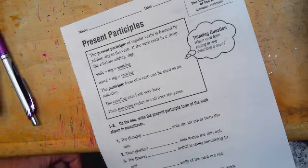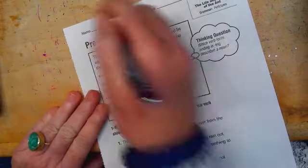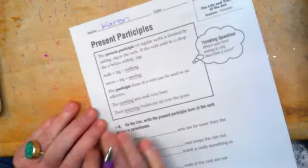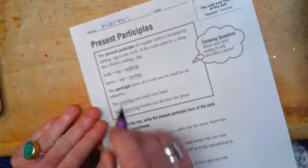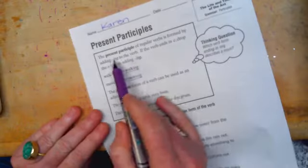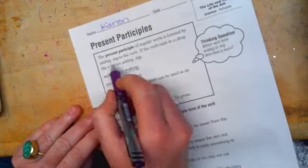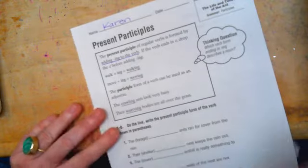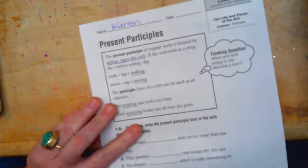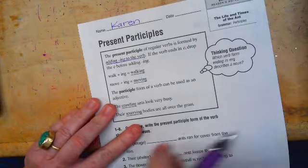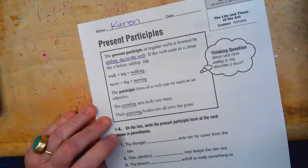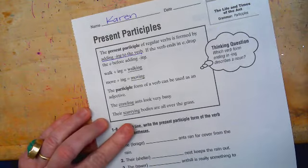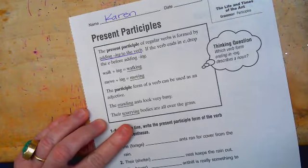All right, so I'm going to start by writing my name at the top of my paper. So the present participle of regular verbs is formed by adding ING to the verb. So we kind of worked on this last week when we had all those ING spelling words. So to form the present participle, you just add ING to the verb.